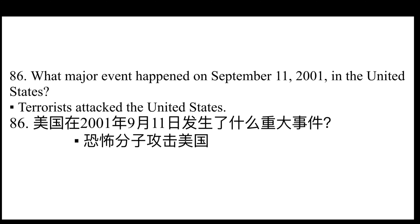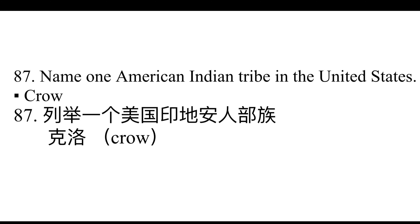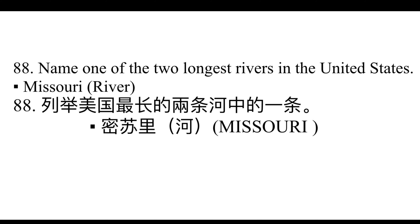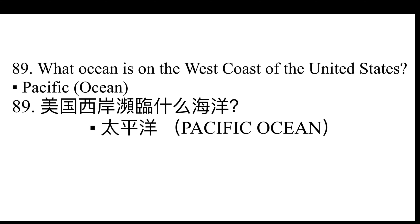What major event happened on September 11, 2001 in the United States? Terrorists attacked the United States. Name one American Indian tribe in the United States. Answers will vary. Name one of the two longest rivers in the United States. Missouri River. What ocean is on the west coast of the United States? Pacific Ocean.